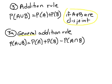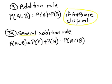I'm calling it rule 3A, but this is a rule that applies whether or not they are disjoint. The general addition rule is: the probability of A or B is the probability of A plus the probability of B — and here's the new part — minus the probability of A and B. Remember, the union symbol means 'or' and the intersection symbol means 'and'.